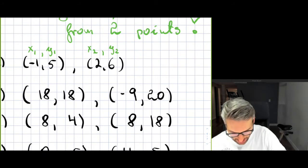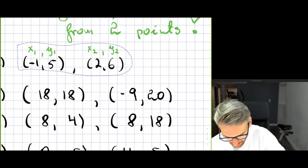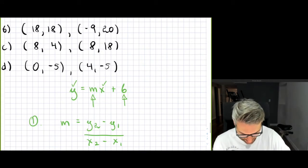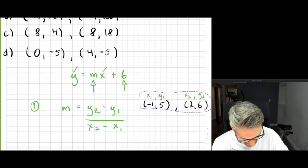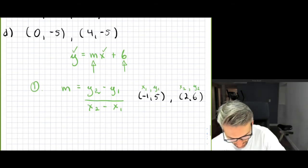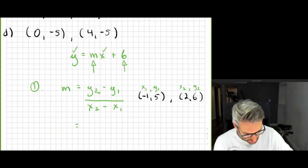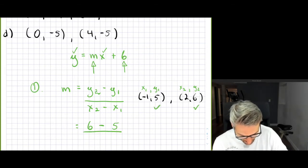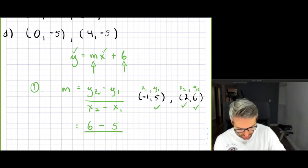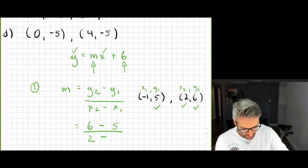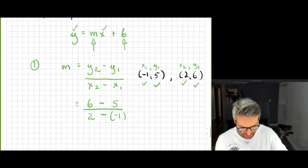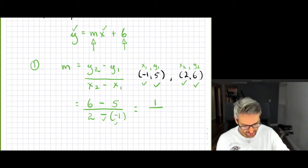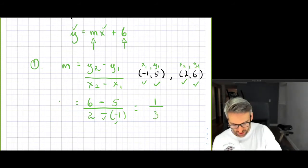Let me copy this example down so we can find the slope. Substituting in: y2 is 6, so 6 minus 5, all over x2 which is 2, minus x1 which is negative 1 — so we put negative 1 in brackets. Simplifying: the numerator is 1, and in the denominator the two negatives cancel to give positive 3. So your slope is 1 over 3.